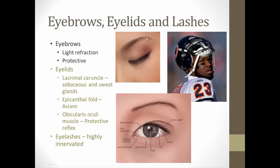The other function of eyebrows is light absorption — the dark color absorbs some of the light so sunlight isn't as glaring. Football and baseball players take advantage of this principle by putting black stripes underneath their eyes to help absorb light, just like Devin Hester from the Chicago Bears uses it to catch the football better.